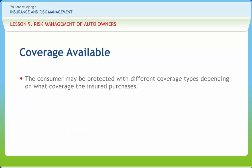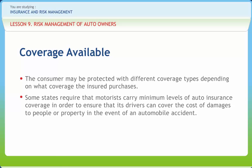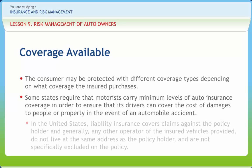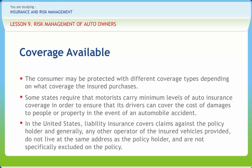The consumer may be protected with different coverage types depending on what coverage the insured purchases. Some states require that motorists carry minimum levels of auto insurance coverage to ensure that drivers can cover the cost of damages to people or property in an automobile accident. Some states, such as Wisconsin, have more flexible proof of financial responsibility requirements. In the United States, liability insurance covers claims against the policyholder and generally any other operator of the insured vehicle. Generally, liability coverage extends when you rent a car, and comprehensive or full coverage policies usually also apply to rental vehicles, though this should be verified beforehand.